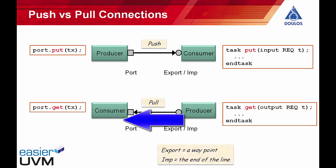At the bottom is a pull connection — the consumer calls get to pull a transaction from the producer on the right, with the producer implementing the get task. A key potential confusion with TLM connections is the contrast between the direction of control flow and the direction of data flow. With a push connection, control flows left to right and the transaction also passes left to right. With a pull connection, control flows left to right — the consumer calls get — but the transaction passes from right to left back to the consumer. Ports allow a component to call tasks or functions declared outside themselves; exports allow components to receive incoming calls to tasks or functions implemented within those components.